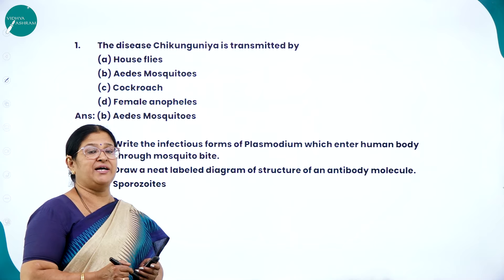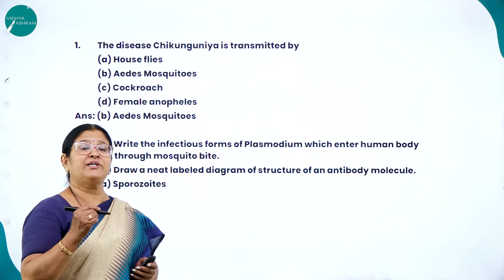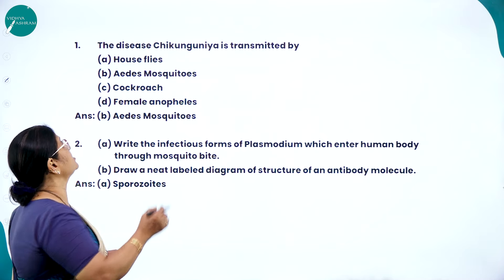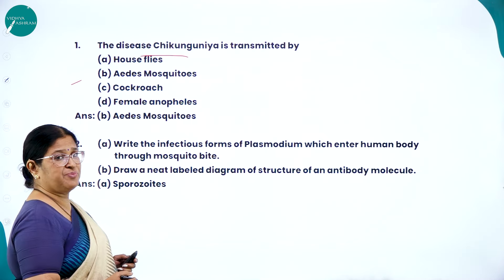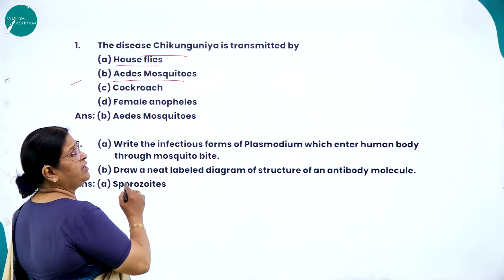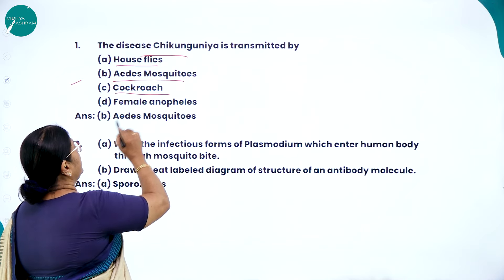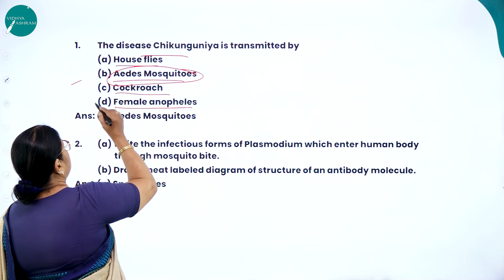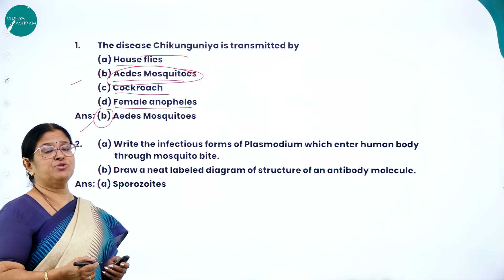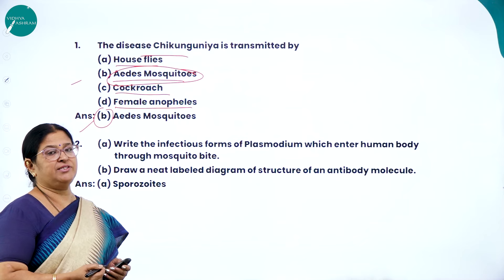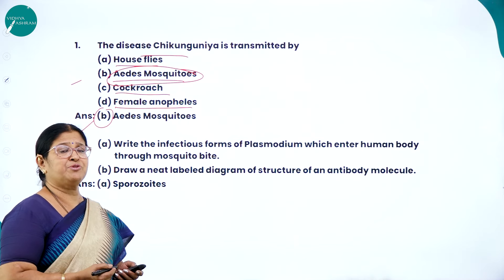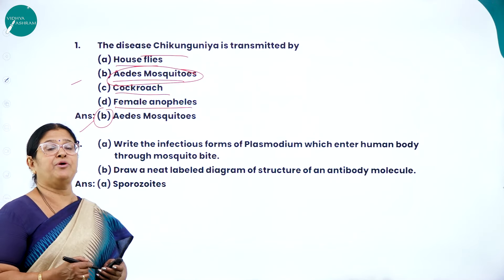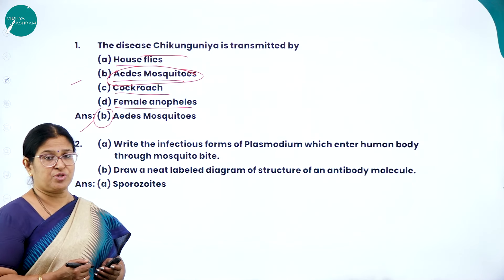Moving on to MCQs — multiple choice questions — that might be asked from this chapter, which has a weightage of 13 marks. For example: the disease chikungunya is transmitted by (A) house flies, (B) Aedes mosquito, (C) cockroach, or (D) female Anopheles. We know chikungunya is caused by the Aedes mosquito, so option B is correct. MCQs are framed based on important concepts, and it is very important to score in multiple choice questions.